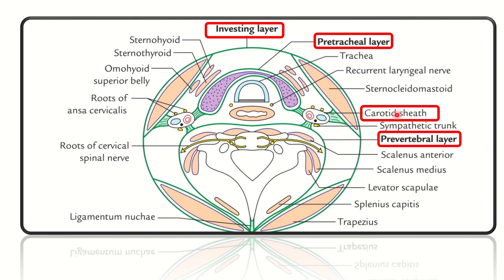The third layer is the carotid sheath, which covers three important structures: the internal jugular vein, the common carotid artery, and the vagus nerve. The carotid sheath contains these three important structures. Then there is the prevertebral fascia.